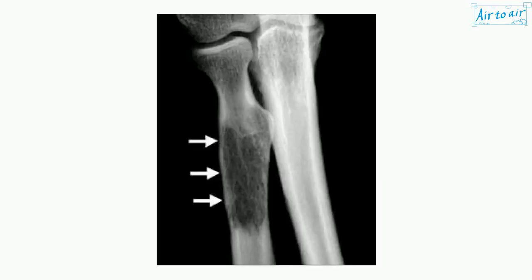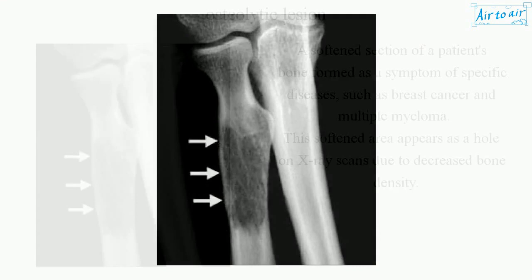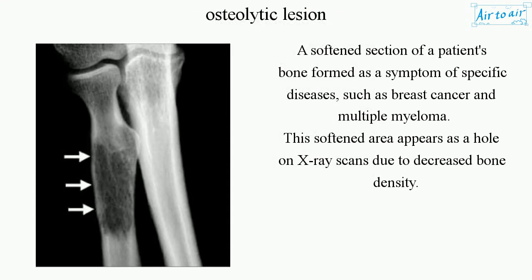An osteolytic lesion is a softened section of a patient's bone formed as a symptom of specific diseases, such as breast cancer and multiple myeloma. This softened area appears as a hole on X-ray scans due to decreased bone density.